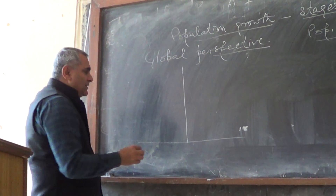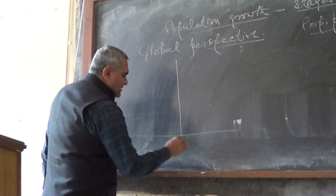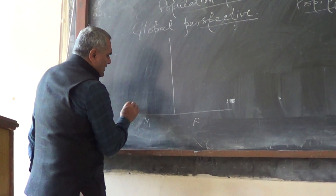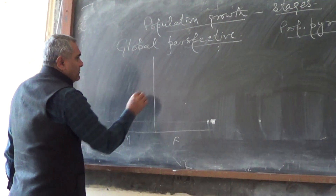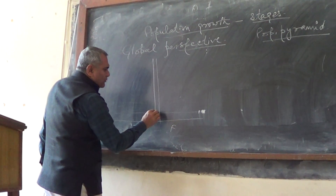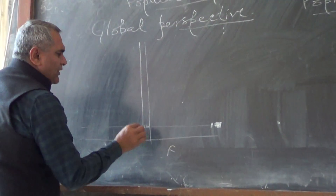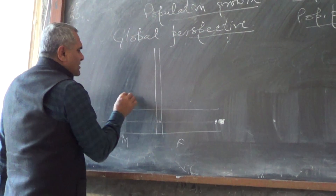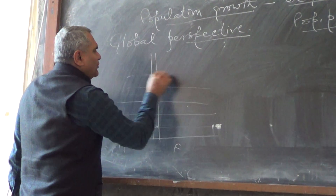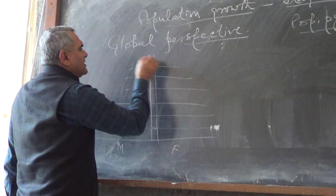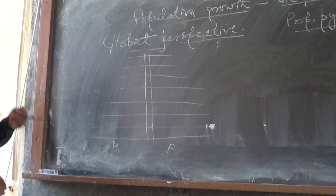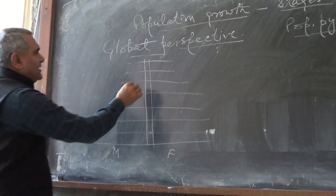It indicates — suppose this is the male side, this is the female side. On this side we can show the age groups: up to 10 years of age, 20 years, 30 years, 40, 50, 60, 70, 80 years. These are the years.